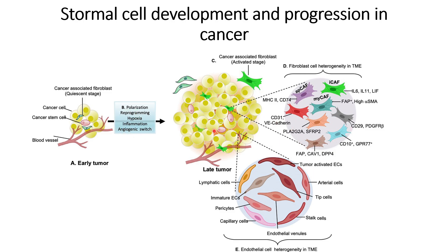The angiogenic switch leads to the formation of new blood vessels so that the nutrient supply to the cancerous tumor cells is maintained. If you need to understand more about the angiogenic process in cancer cells, you can go through our previous videos. For more on stromal cell development and progression, you can refer to the reference provided in the description. That's all for this video, thank you for your time.